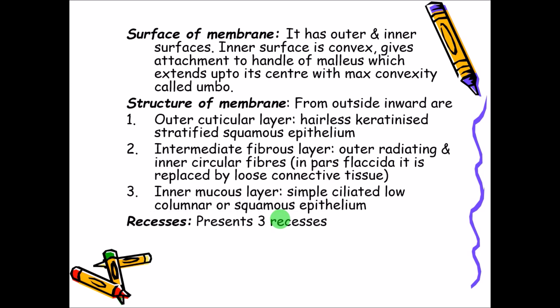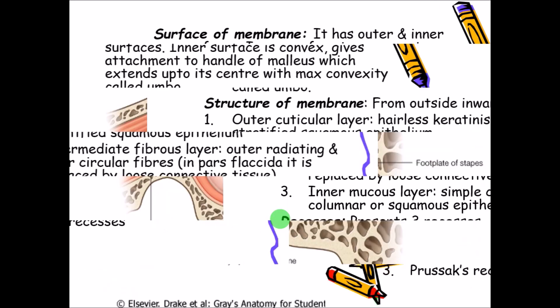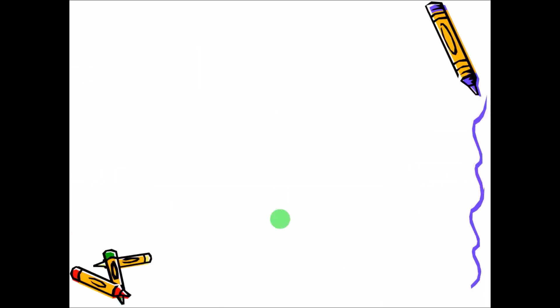Around the tympanic membrane there are three recesses or small spaces: the anterior recess, the posterior recess, and the Prussak's recess. These recesses cannot be seen in these pictures but they are present.